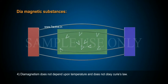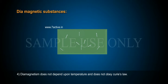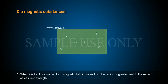Diamagnetism does not depend upon temperature and does not obey Curie's law. When kept in a non-uniform magnetic field, it moves from the region of greater field to the region of less field strength.